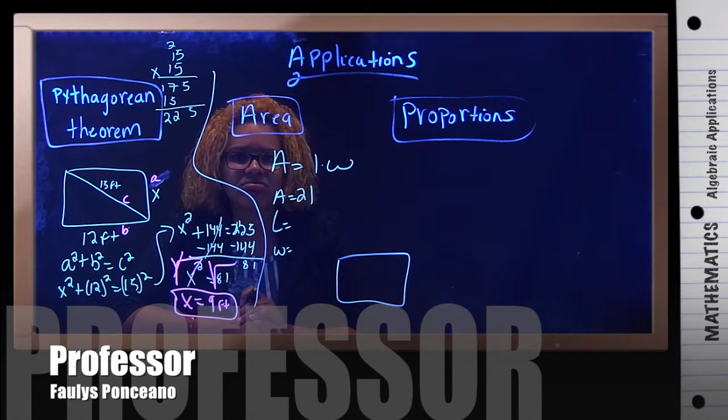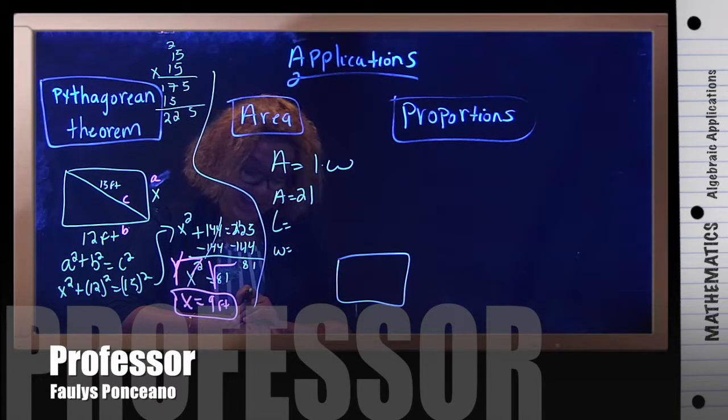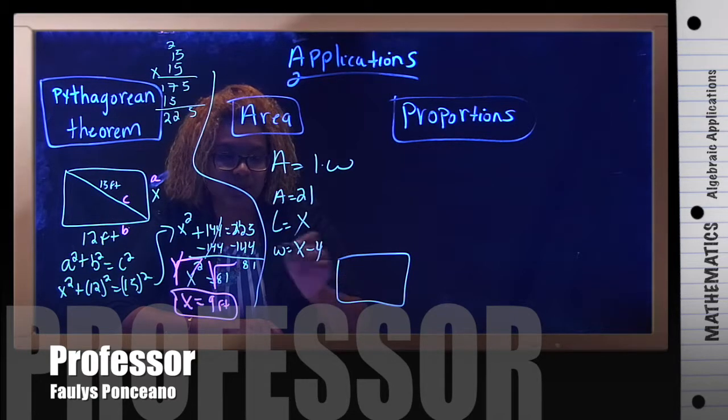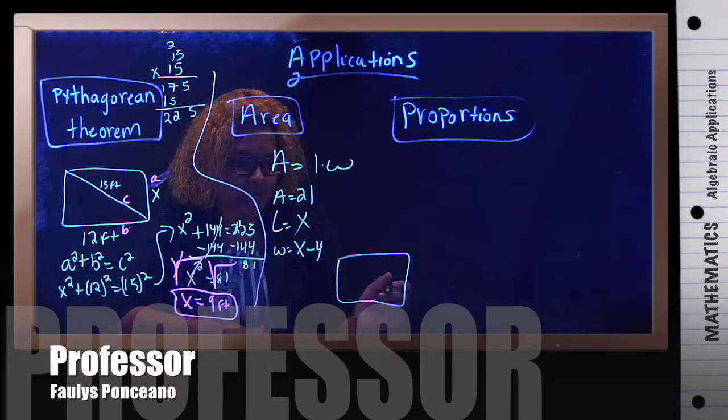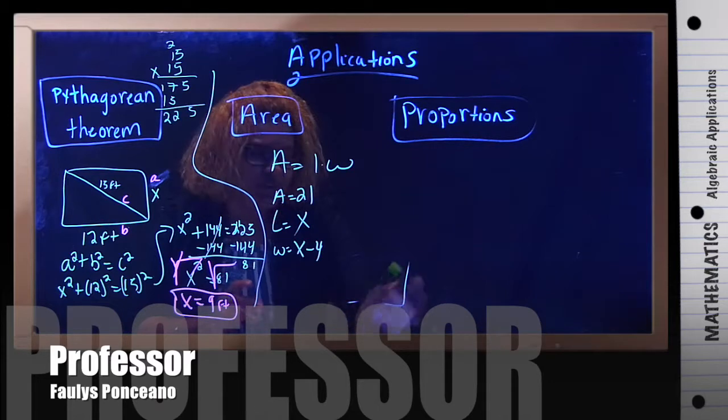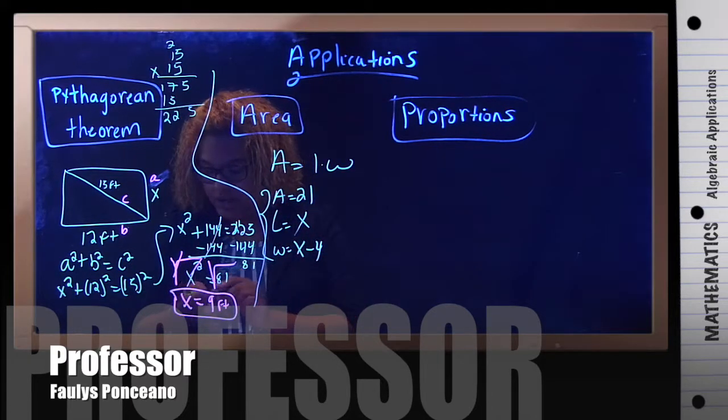Now, do we know anything about the length? No, it doesn't say anything about the length. Let's read it again to double check. A rectangle is drawn so that the width is 4 feet shorter than the length. The area of the rectangle is 21 square feet. Find the length of the rectangle. So, no, they didn't give us no information about the length. So, we don't know. They did say that the width is 4 feet shorter than the length. So, x minus 4. So, now we're going to take this information and plug it into our formula.